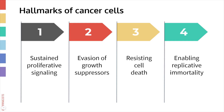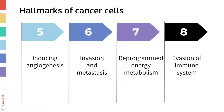We're going to go through the eight hallmarks of cancer cells one by one. The properties are: sustained proliferative signaling, evasion of growth suppressors, resisting cell death, enabling replicative immortality, inducing angiogenesis, invasion and metastasis, reprogrammed energy metabolism, and evasion of the immune system. You're not responsible for knowing the specific name of each hallmark, just the ideas behind each property.